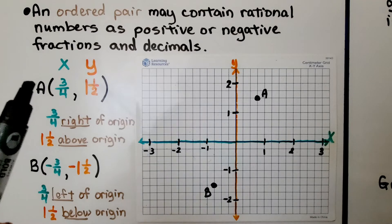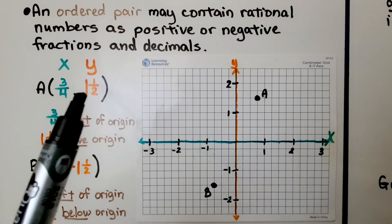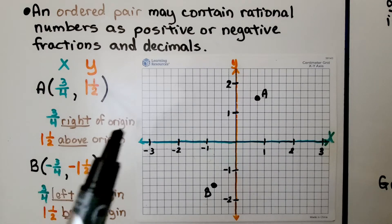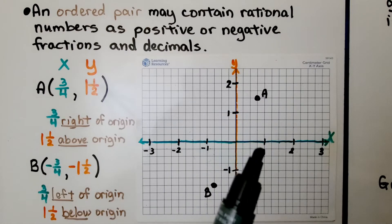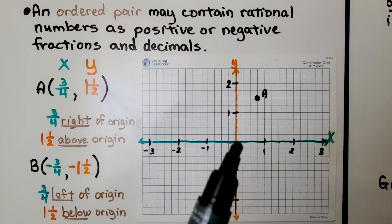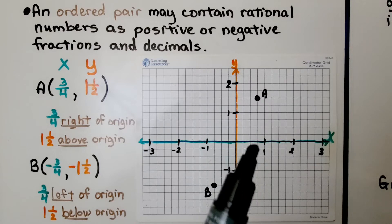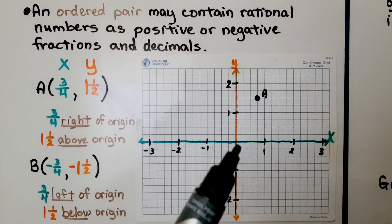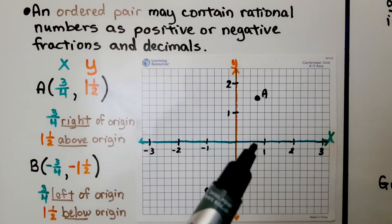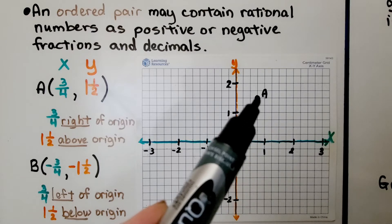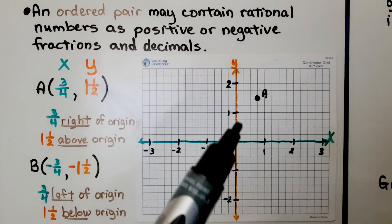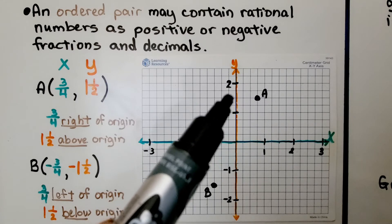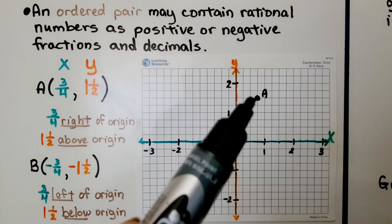Point A is at three-fourths for x and one-and-a-half for y. We go three-fourths right of the origin because it's a positive three-fourths. The grid is in increments where four units equals one, so to find three-fourths we go to the third unit. Then we go up to one-and-a-half, which is between one and two. Point A is right there.